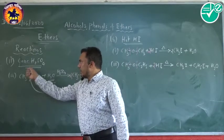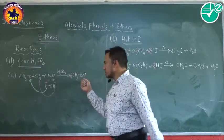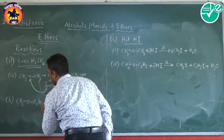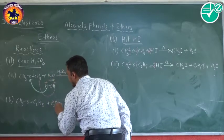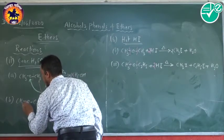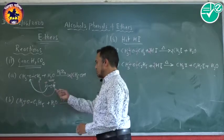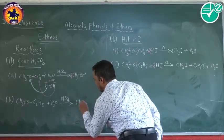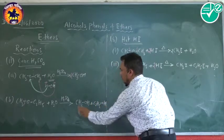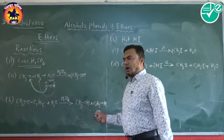In short, a simple ether reacting with sulfuric acid gives a simple alcohol. With a mixed ether reacting with sulfuric acid, cleavage takes place again. The smaller alkyl group gets detached and combines with OH-. We get one molecule of methyl alcohol and one molecule of ethyl alcohol. In short, a mixed ether treated with sulfuric acid forms two different alcohols.